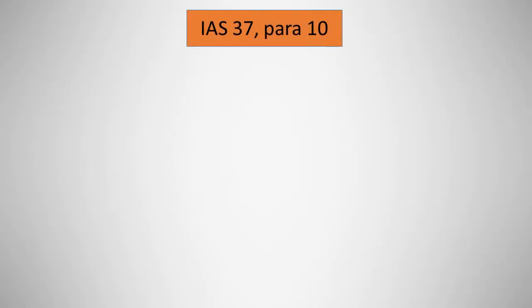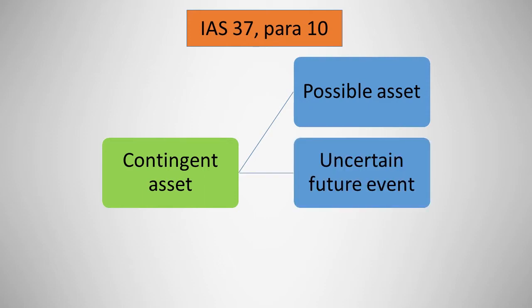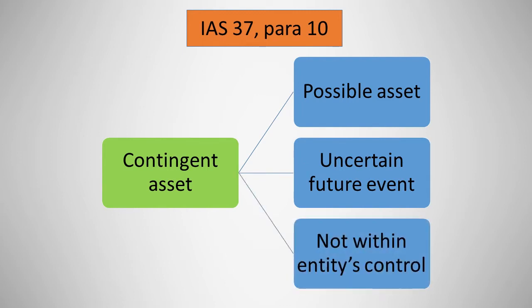IAS 37 paragraph 10 defines a contingent asset which has three important elements in the definition. These are a possible obligation that will be confirmed by the occurrence or non-occurrence of one or more uncertain future events and these are not necessarily within the control of the entity.